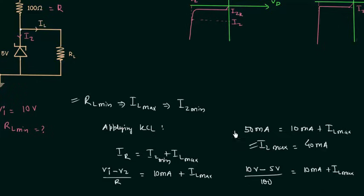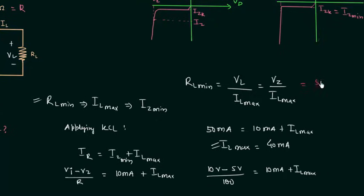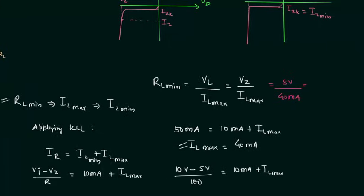Using this value we can calculate RL minimum. RL minimum equals VL divided by IL maximum. VL is the voltage across the load resistance, and VL is also equal to Vz since both voltages are measured across the same points. So RL minimum equals Vz divided by IL max, which is 5V divided by 40 mA, giving RL minimum equal to 125 ohms.